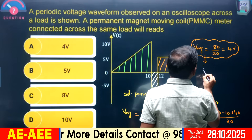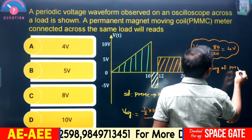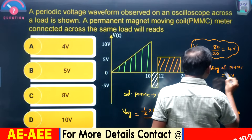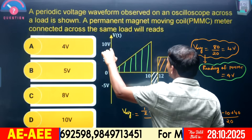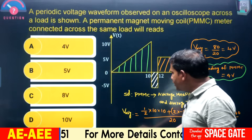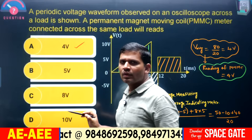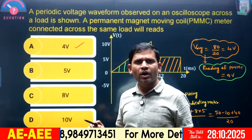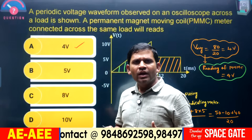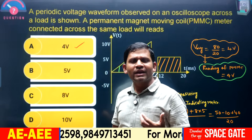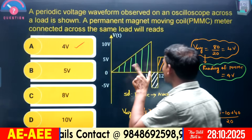The reading of the PMMC is 4 volts, because PMMC measures the average value. Option A is the correct answer. Remember: if any waveform is applied to DC meters, it measures the average value. If any waveform is applied to AC meters like MI or EDM, it measures the RMS value. These statements are required to solve these types of questions.